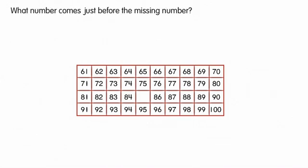What number comes just before the missing number? 84 comes just before the missing number. What number comes just after the missing number?